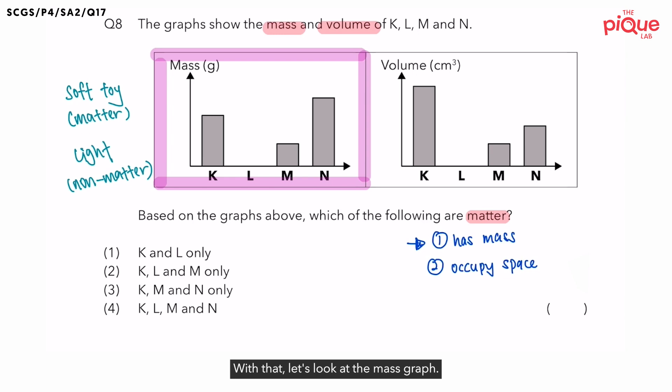With that, let's look at the mass graph. So how is mass going to be represented in this graph? Basically, whenever there's a reading shown on the electronic balance, the reading will be represented by a bar in the graph. So let's look at K. We see a bar for K. What does this mean? It means that K has mass.